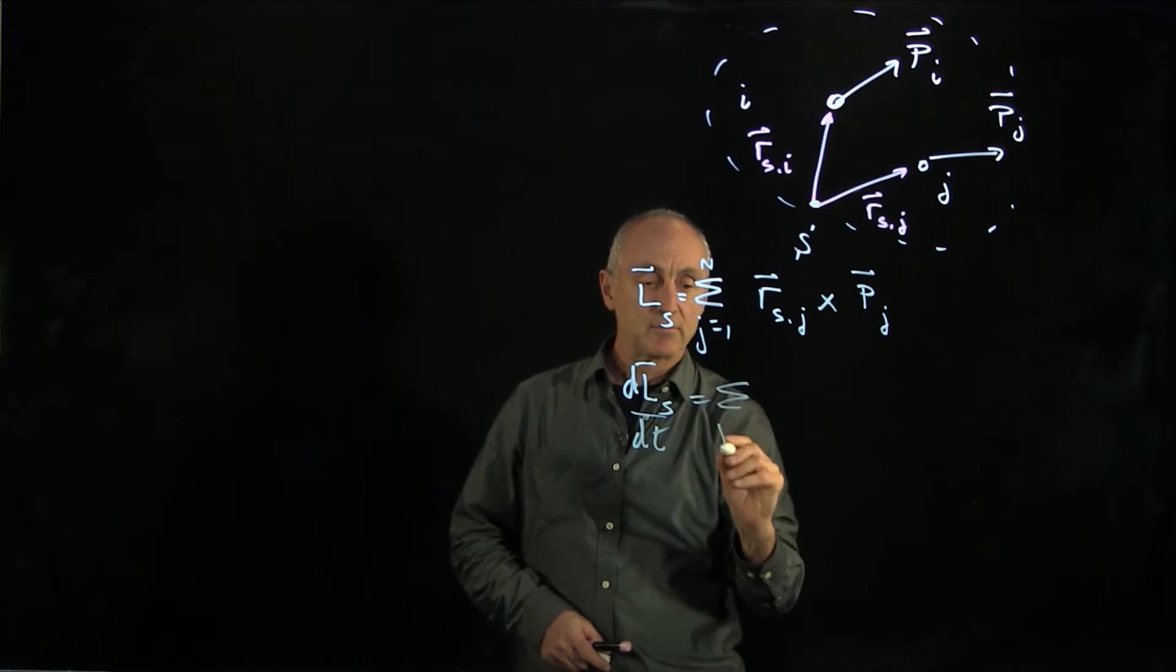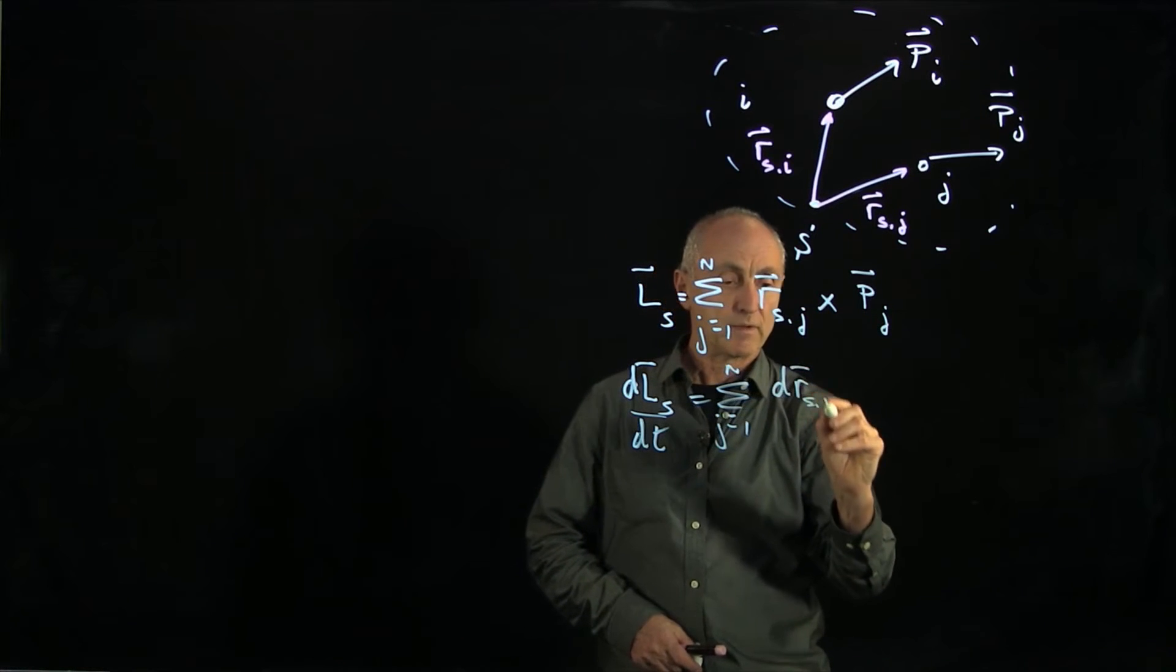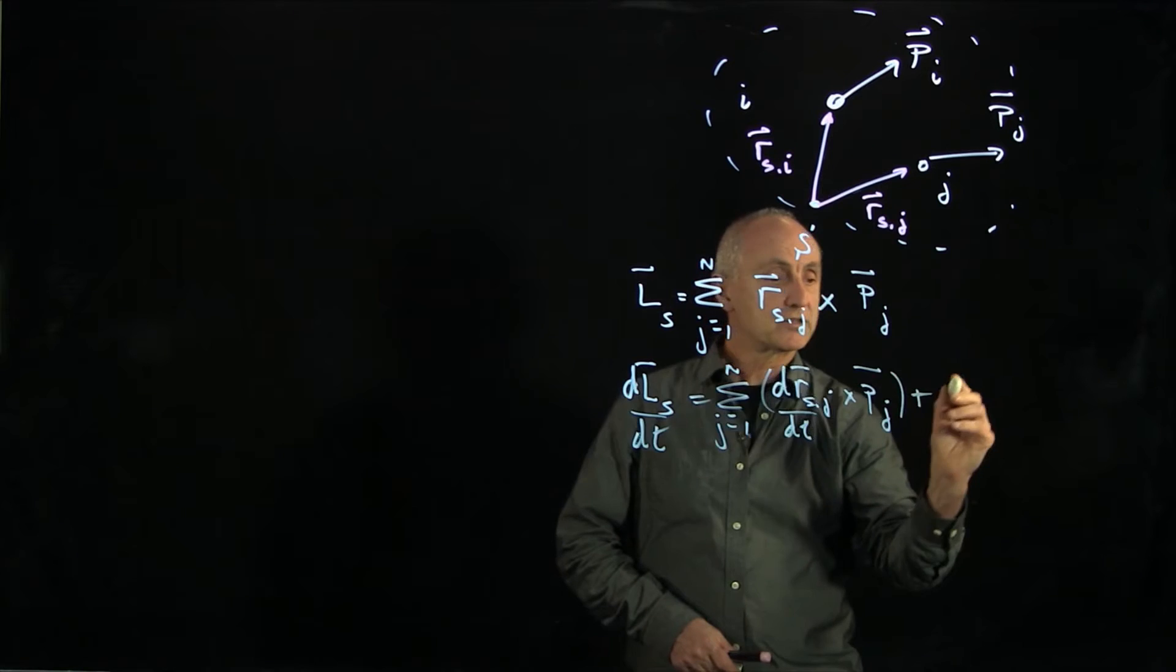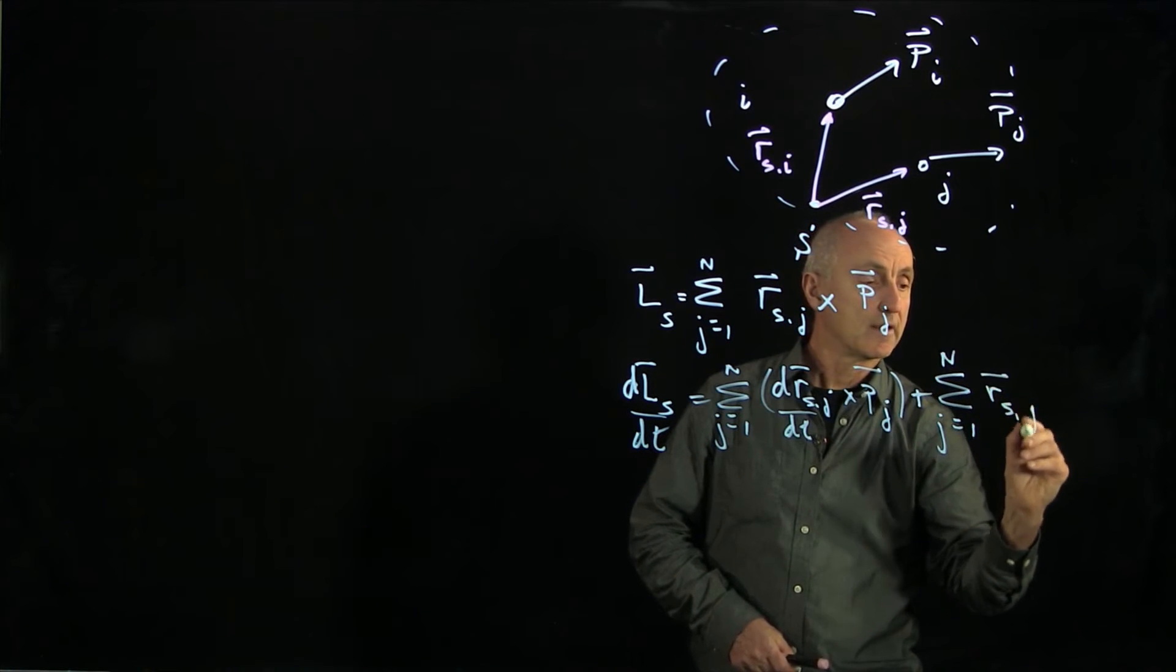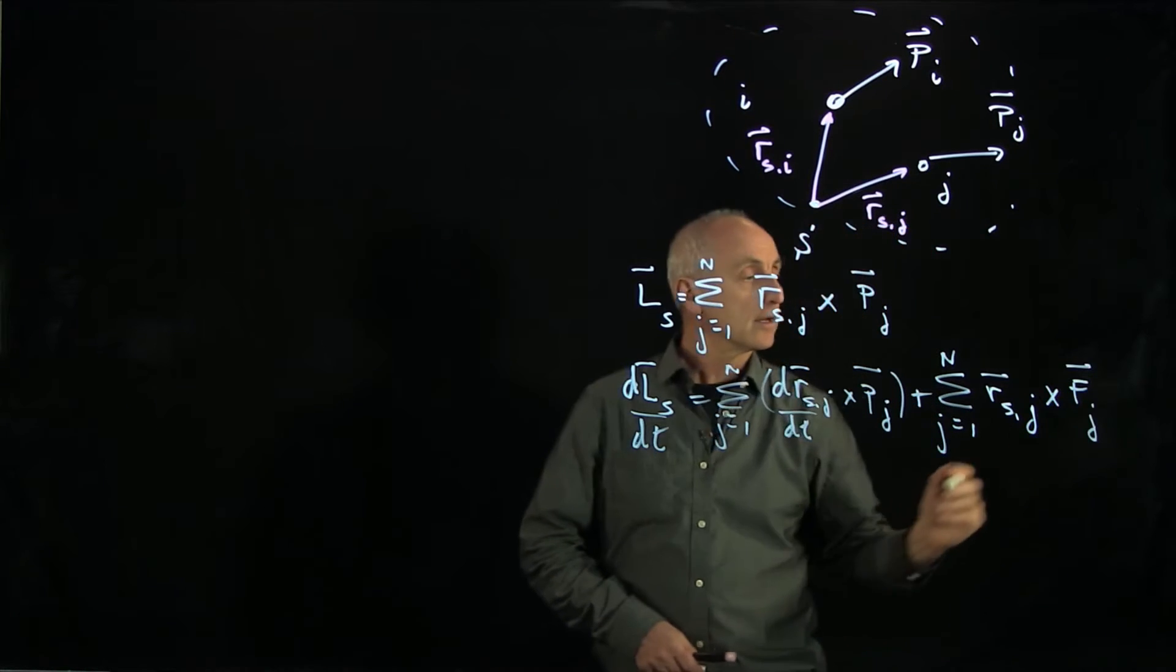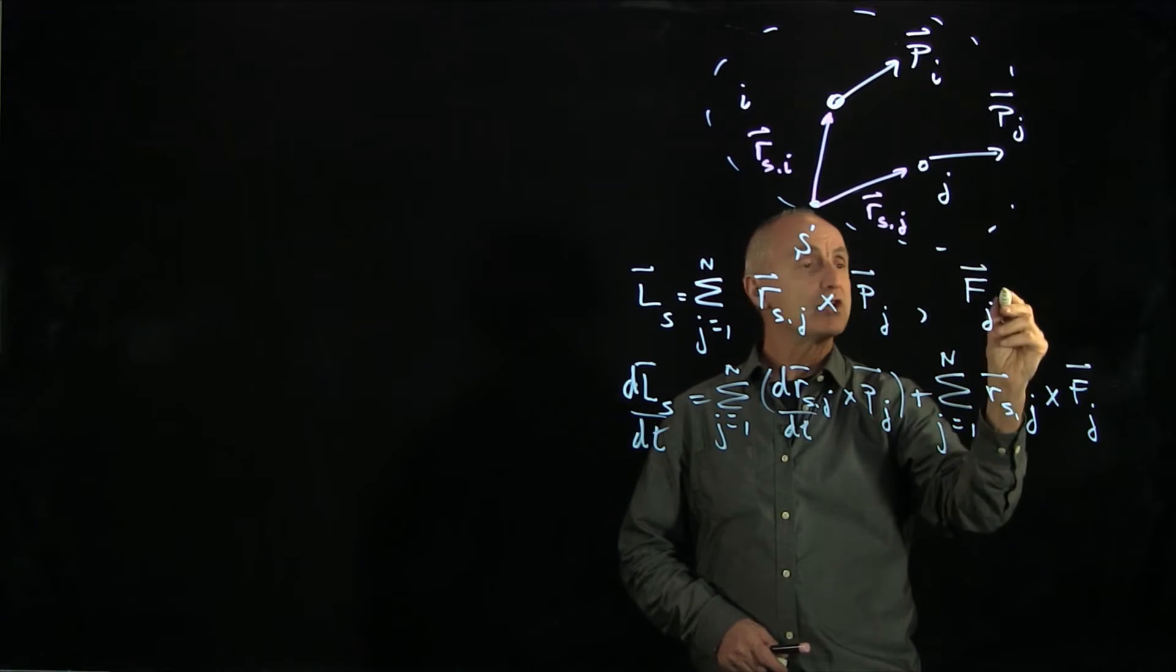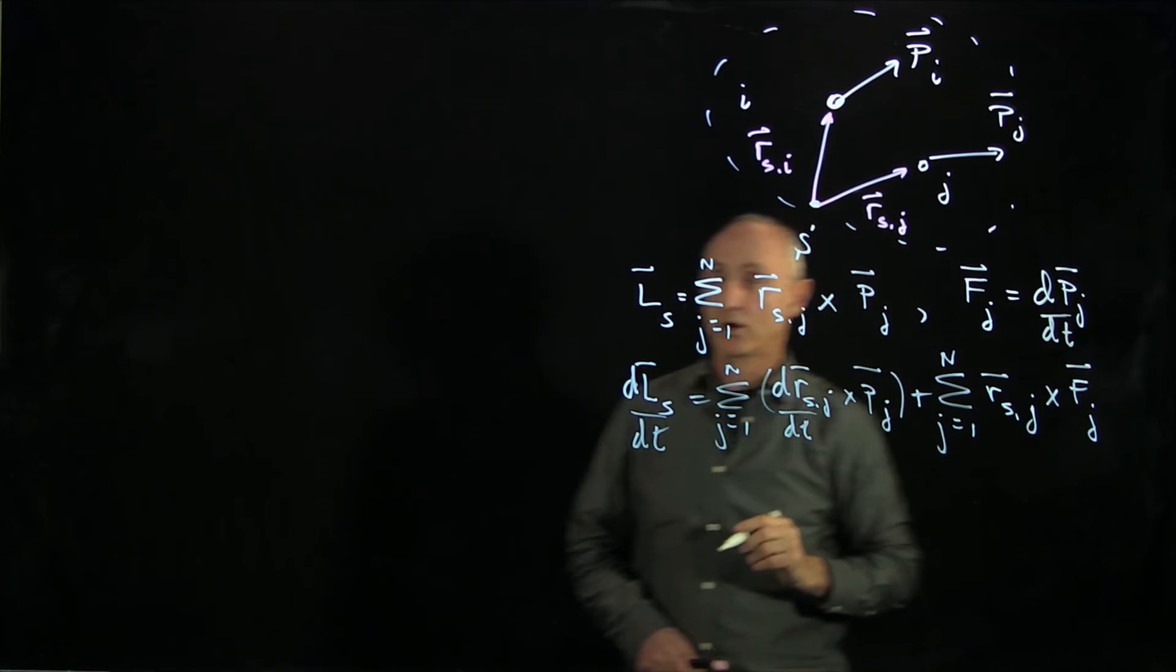We have the sum j goes from 1 to n. We have two derivatives here by the product rule, plus the sum j goes from 1 to n of rsj cross fj, where we use the fact, as we did before, that the force on the j-th particle is equal to the change in momentum of the j-th particle.